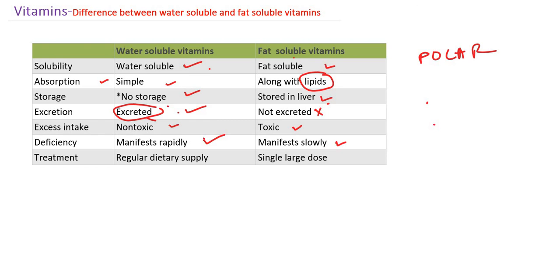Water-soluble vitamins are not stored — every day they are excreted in the urine. So for treatment purposes, we have to supply them daily through regular dietary intake. Whereas fat-soluble vitamins are stored, so we can supply them in a single dose and it will be sufficient for even six months or one year.